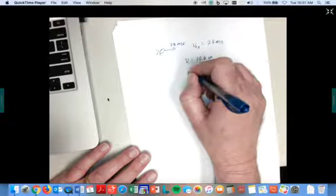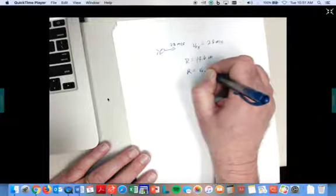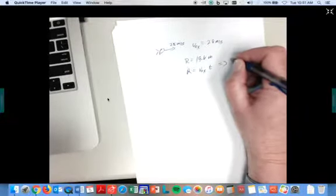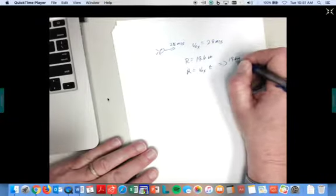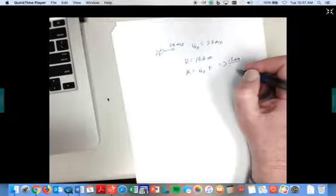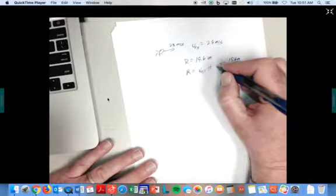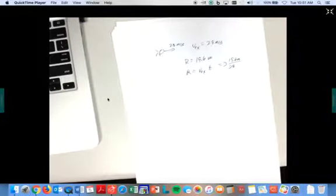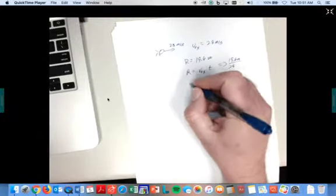Well, hold on. We know the range is equal to v_naught_x times the time. So therefore, if I take 19.6 and divide it by 28, I get 0.7 seconds.